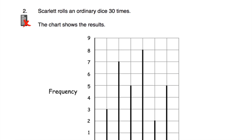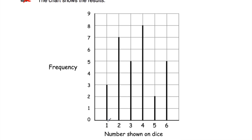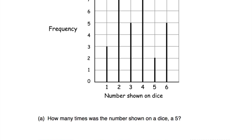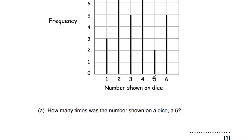Question number two: Scarlet rolls an ordinary dice 30 times and the chart shows the results. She gets one three times, a two seven times, a three five times, a four eight times, a five two times, and a six five times. Part A says how many times was the number on the dice five? The number five was shown two times — she rolled the dice 30 times and got two number fives.